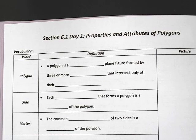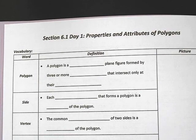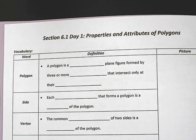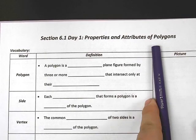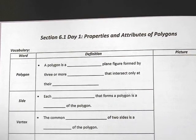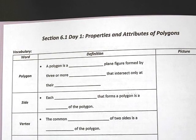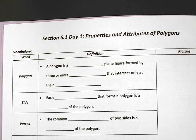Class, welcome back. Today we start our next chapter, chapter 6, and we are working on quadrilaterals. Before we can really get into quadrilaterals, which are a very specific type of polygon, we need to talk a little bit about polygons. So we're going to spend a little bit of time talking about polygons, and then we'll jump into quadrilateral stuff in the next few days.